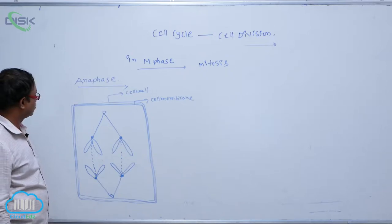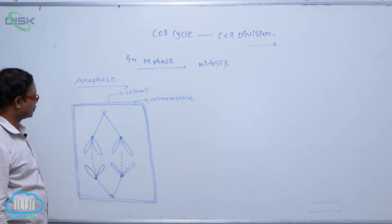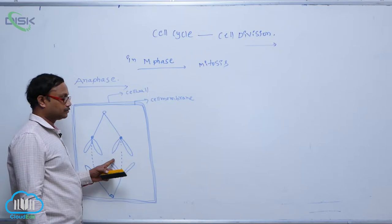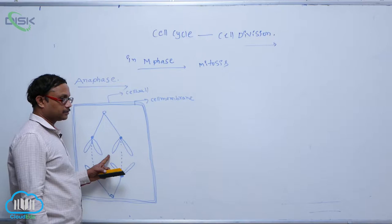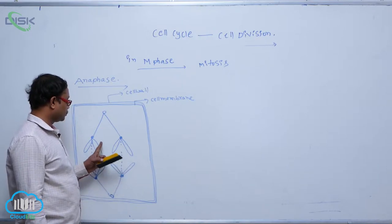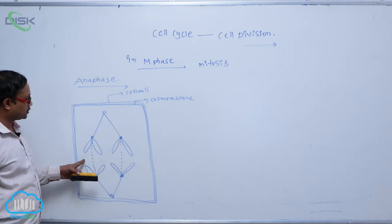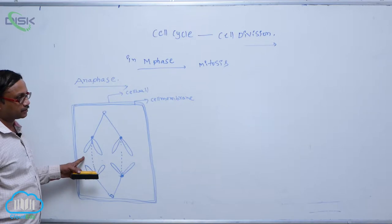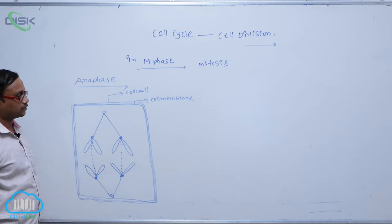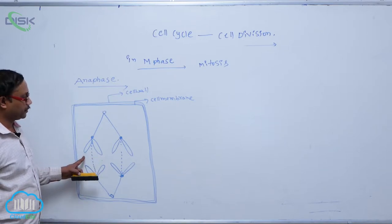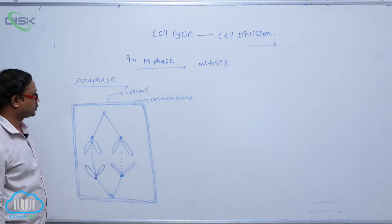In the anaphase process, each chromosome splits at the centromere. After that division of the centromere, each chromatid acts as a chromosome of the future daughter nuclei. Chromosomes are moved towards the opposite poles after the division of the centromere.